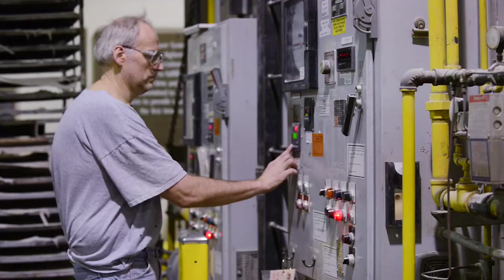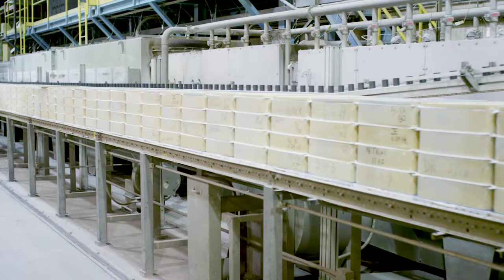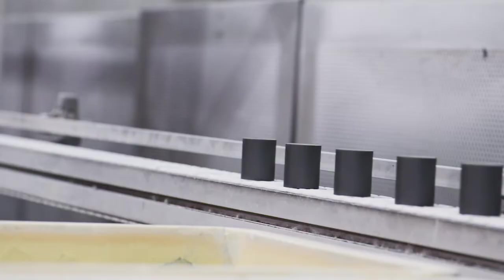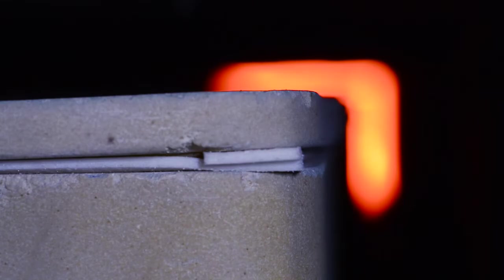Each MOV is carefully loaded into a ceramic carrier box for transport through the kiln. It will take approximately three days for each MOV to travel the entire length of the kiln and return to the loading position. During this time, the zinc oxide crystals will grow in a process known as sintering.